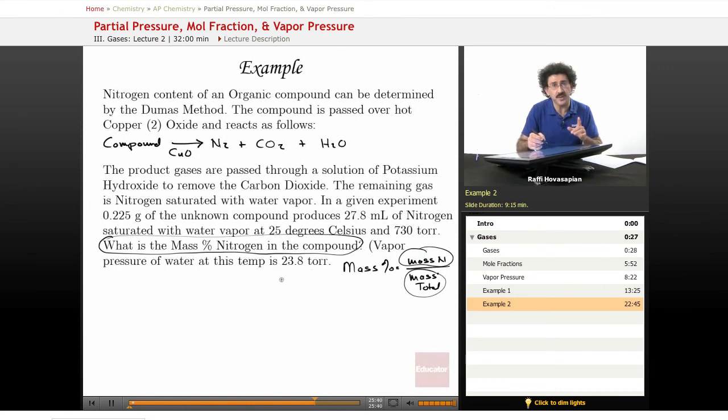We're dealing with a mixture here. We have a mixture of water vapor and nitrogen because the carbon dioxide has been removed by the potassium hydroxide solution. Therefore, our total pressure of the system is equal to the partial pressure of the nitrogen gas plus the partial pressure of the water vapor.